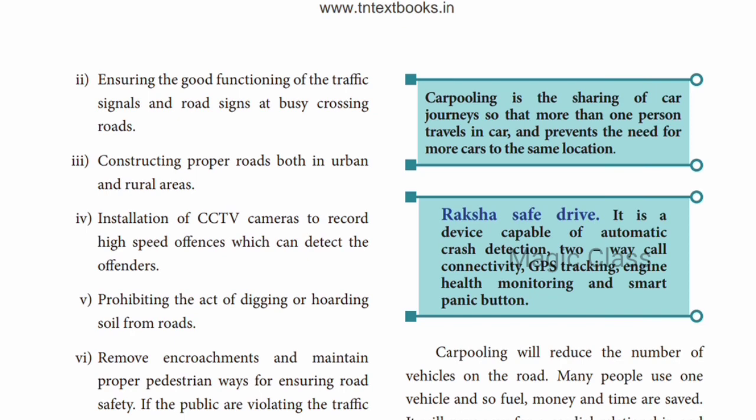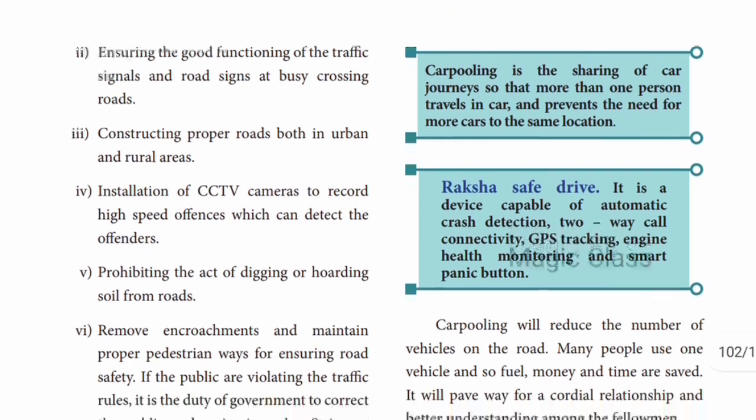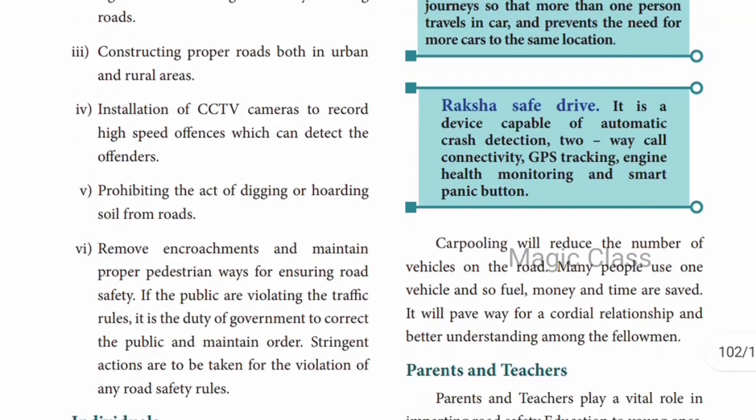If you are over-crossing the speed limit, CCTV cameras are going to automatically capture it. CCTV cameras will be installed on the main roads. The government will also remove encroachments and maintain proper pedestrian ways for ensuring road safety.